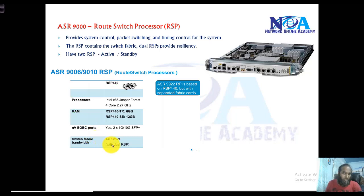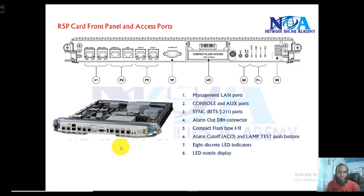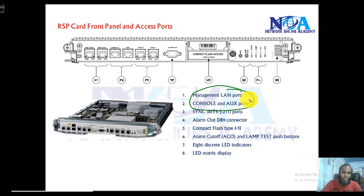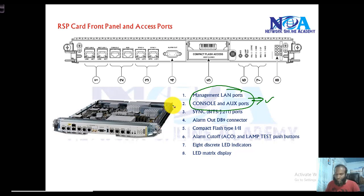Switch fabric is the next important component. This is like the front panel of this card, and typically you'll find the management ports like console and auxiliary ports on the front panel of the route switch processor cards. There will be two RSPs — one active and one standby.